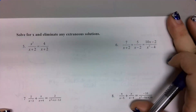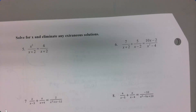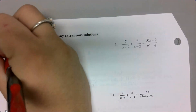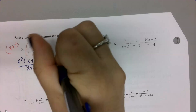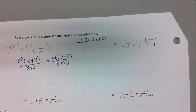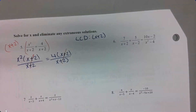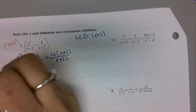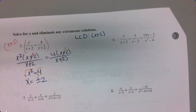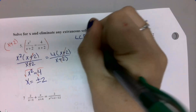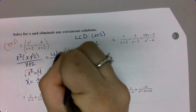These want me to solve for x and eliminate any extraneous solutions. On this one I can multiply by my LCD, which is x plus 2. That gives me x squared times x plus 2 over x plus 2 equals 4 times x plus 2 over x plus 2. The x plus 2's cancel out of both fractions, so I'm left with x squared equals 4. Taking the square root of both sides gives plus or minus 2. But looking back at my original denominator, x can't equal negative 2, so my only answer is x equals 2.